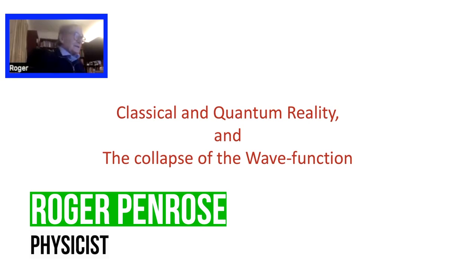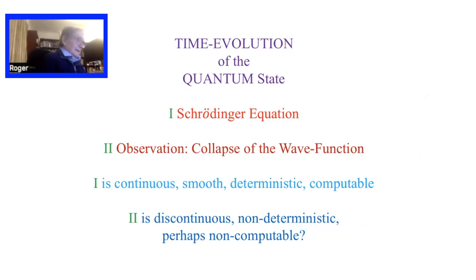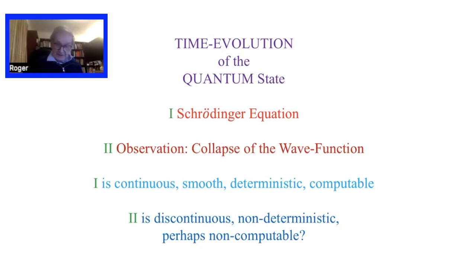The title here is 'Classical and Quantum Reality and the Collapse of the Wave Function.' I want to talk about how the quantum state evolves. Normally we think about it as evolving according to the Schrödinger equation, but that doesn't tell us how the world behaves. We have to supplement that by, from time to time, the collapse of the wave function. This is often not accepted as a law of evolution of the world, but that's what we do when we try to make quantum mechanics concur with what actually happens. The Schrödinger equation is smooth and deterministic, whereas the collapse of the wave function seems to happen suddenly — we don't really understand what's going on, and it's not deterministic as far as we can make it.